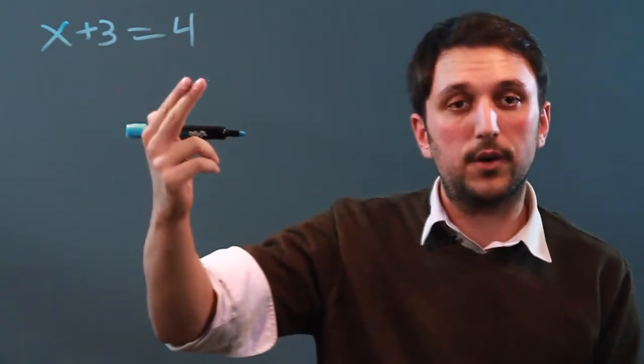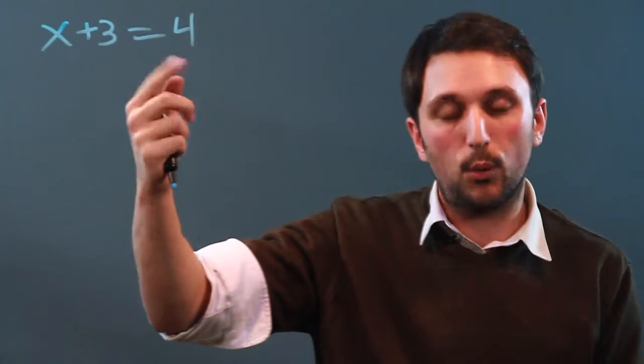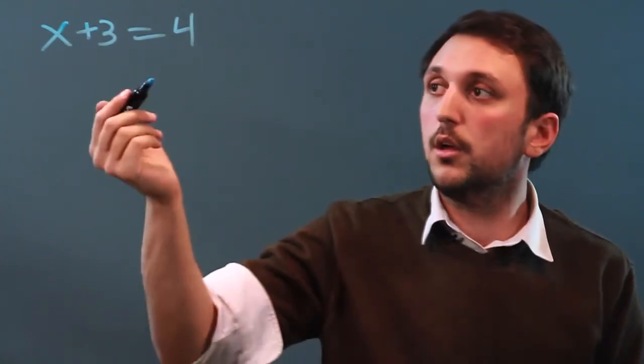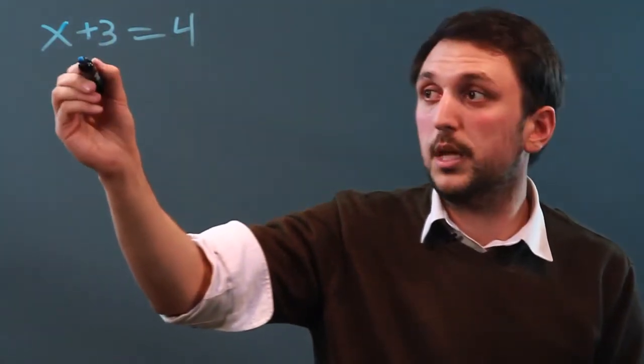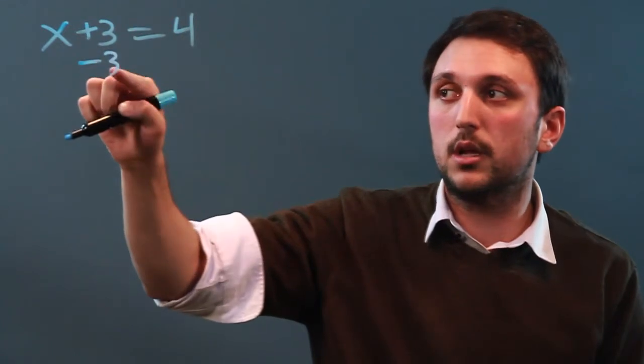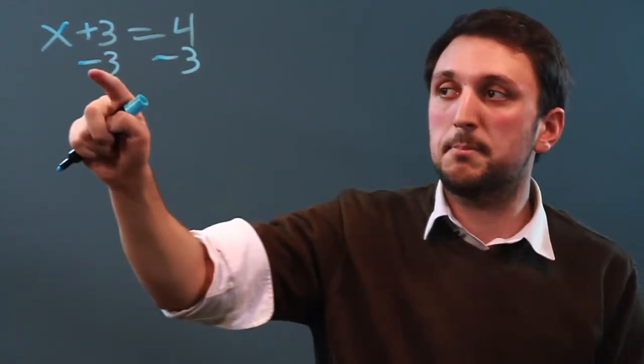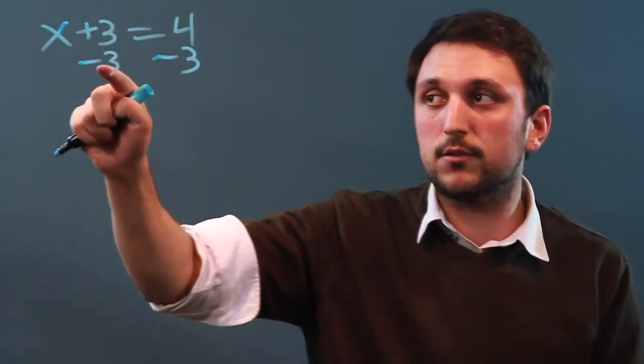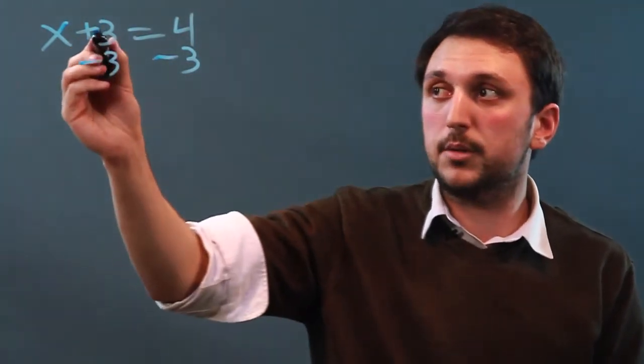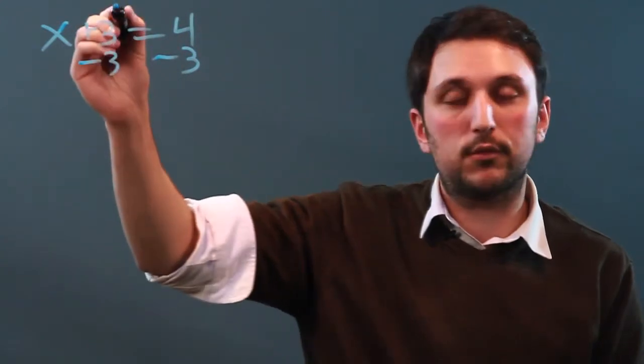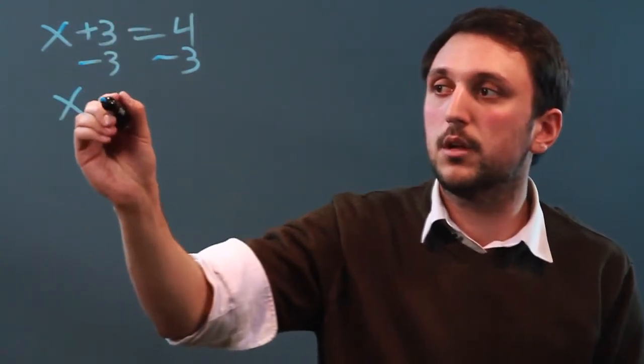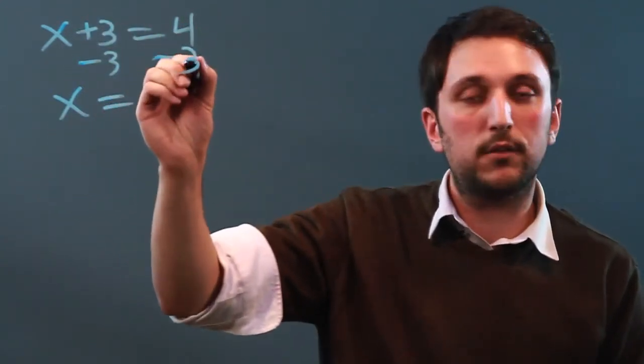You're probably going to want to solve for x, which means you're going to have to add or subtract a real number. So the first thing we would do would be to subtract positive 3 from each side. So when we say minus 3, we're saying minus positive 3. And in that case, plus 3 minus 3 cancels out, so we have just plain x equals 4 minus 3.